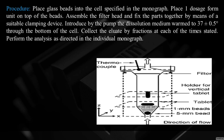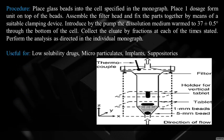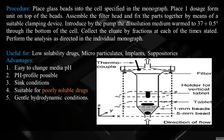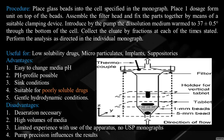Procedure: place glass beads into the cell, place one dosage unit on top of the beads, assemble the filter head and clamp. Pump dissolution medium warmed at 37 ± 0.5°C through the bottom of the cell. Collect eluates by fraction at each stated time. A 5 mm bead is placed at the bottom, then 1 mm beads, with the tablet held vertically. Useful for low-solubility drugs, microparticulates, implants, and suppositories. Advantages: easy media change, pH profile possible, suitable for poorly soluble drugs. Disadvantages: deaeration necessary, high media volume, limited experience, no USP monographs, pump precision influences results.